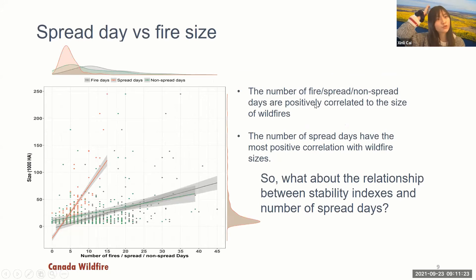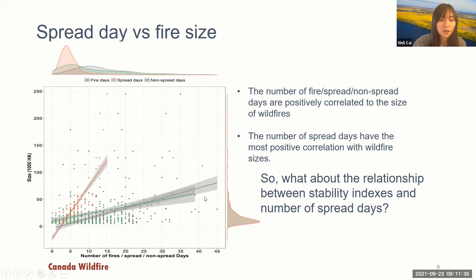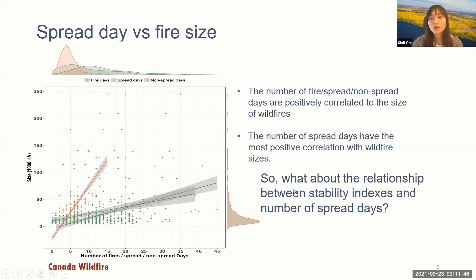We also examined spread days versus fire size using a simple linear regression of number of fire days versus fire size. The number of fire days, spread days, and non-spread days are all positively correlated with wildfire size. Interestingly, the number of spread days has the most positive correlation with fire size among these three, leading us to investigate the relationship between stability indexes and the number of spread days.